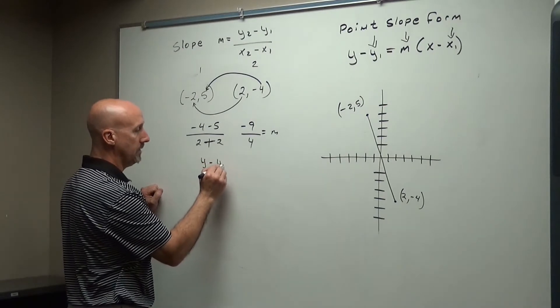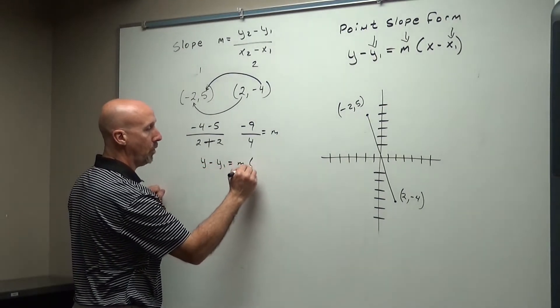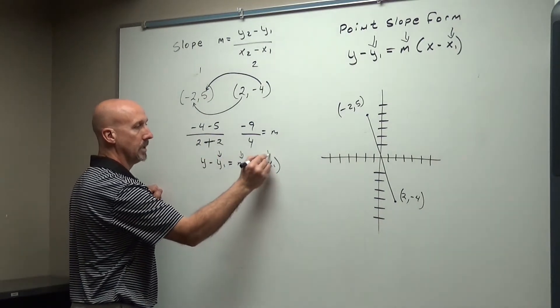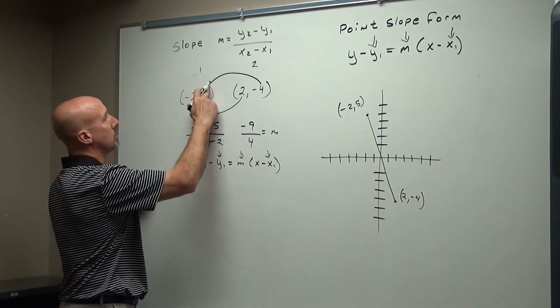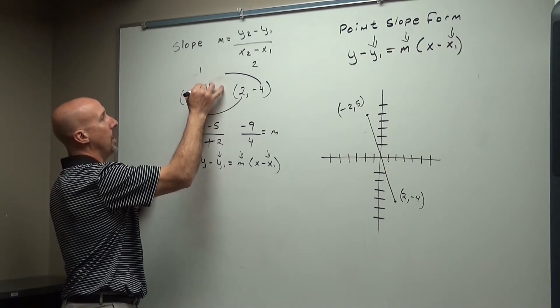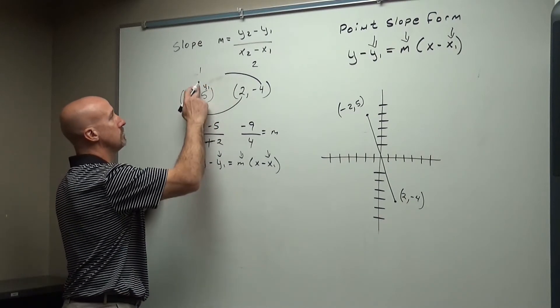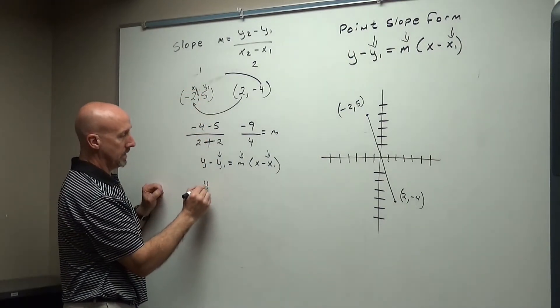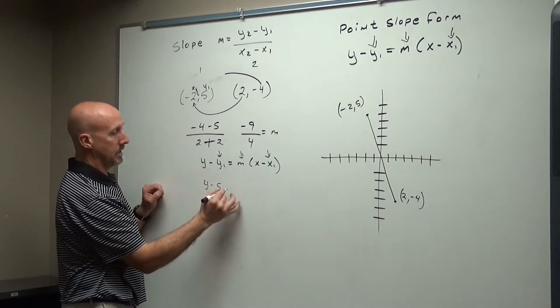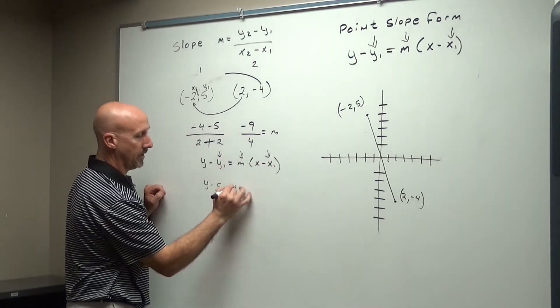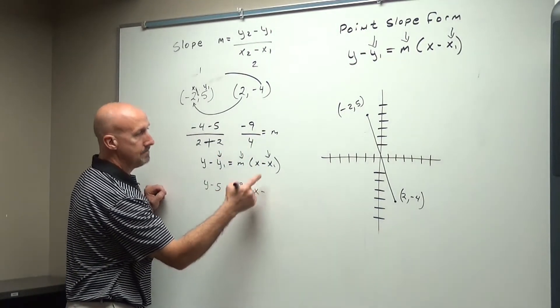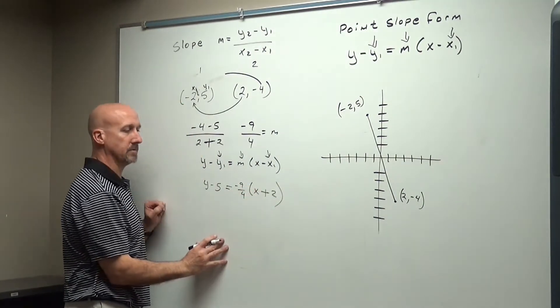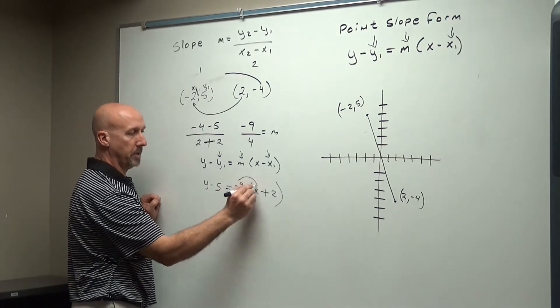So we're going to use our formula, the point-slope form. And I need three things. Let's say this is my first point, so this is going to be y1, and this is my x1. All right, so y1 is 5. My m is negative 9 over 4. My x1 is negative 2. It gives me a positive when I have two negatives next to each other.